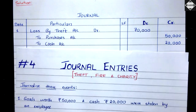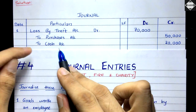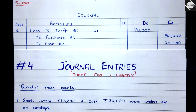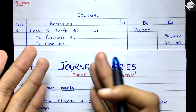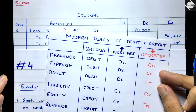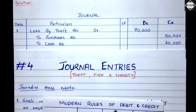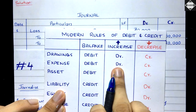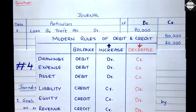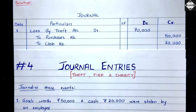The journal entry for this is: Loss by Theft Account — debit; to Purchase Account; to Cash Account. We credit purchases and cash because these things have been stolen and are no longer in the business. Purchases is an expense account and cash is an asset account — both are decreasing so we credit them. Loss by Theft is the invisible loss expense we recognize by debiting it. The amounts: Purchase Account 50,000; Cash 20,000; total loss suffered by the business is 70,000.